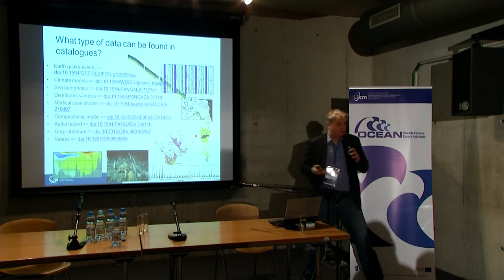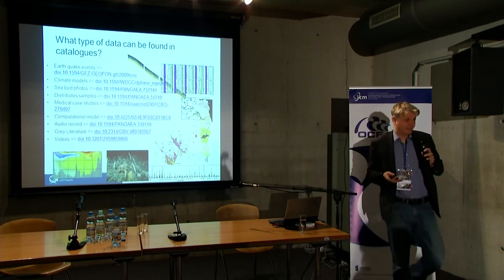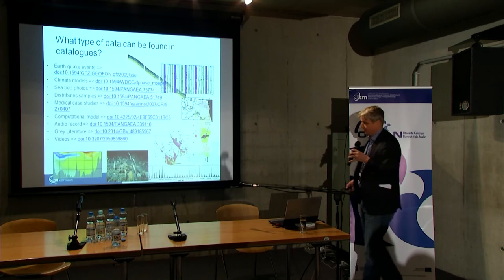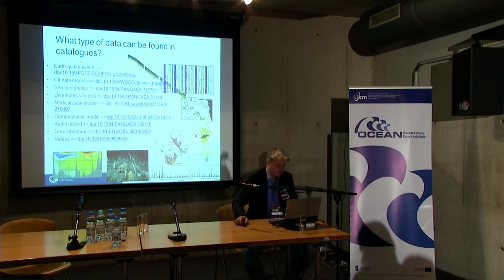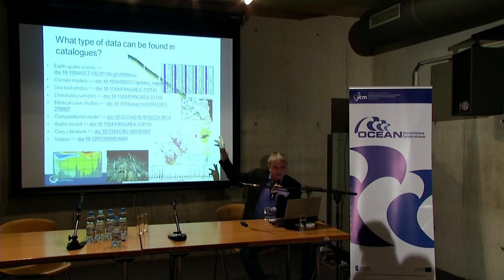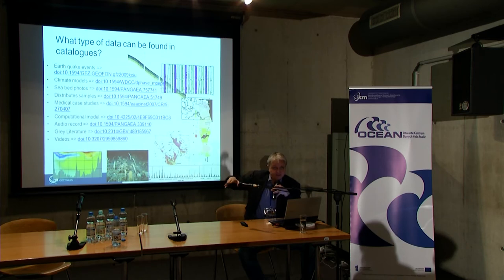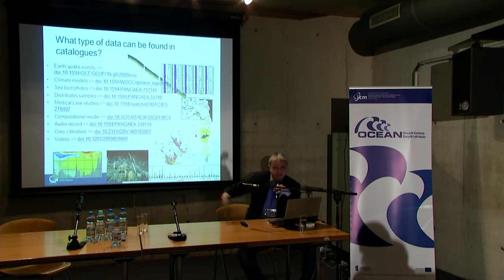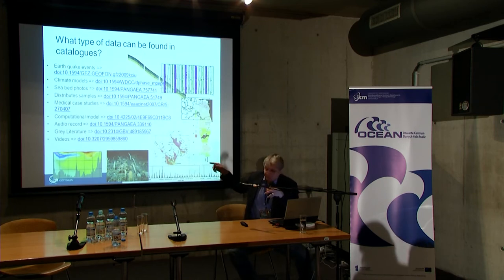Anything can be of interest when we talk about publishing data. All these examples have a DOI as a persistent identifier — that was the basic idea ten years ago: publish any kind of data with a DOI as an independent published object. Just as an article has a DOI, a dataset has a DOI. All of these are referenceable because they have a DOI.